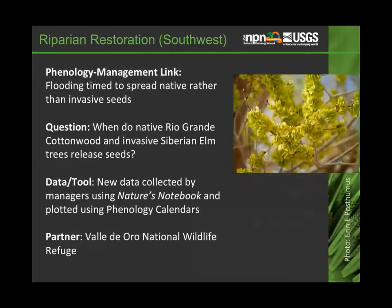Another project in the Southwest uses the product similarly: flooding is timed to spread native rather than invasive seeds. The question is when do native Rio Grande Cottonwood versus Siberian Elm release seeds. They're collecting new data and looking at it using our phenology calendars to see when those two seed releases happen so they can better time the flooding. That's with Valle de Oro National Wildlife Refuge.